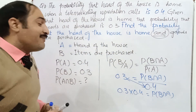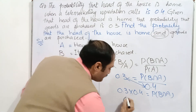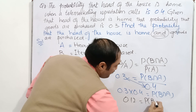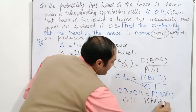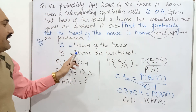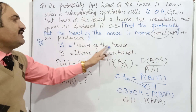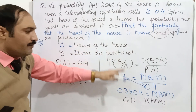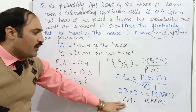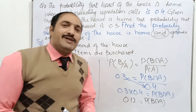So when we multiply these two terms, 0.3 multiplied by 0.4 equals probability of B intersection A, which gives us 0.12. So the probability that items are purchased and the head of the house is home is 0.12.